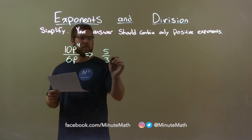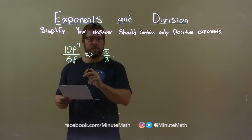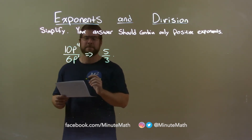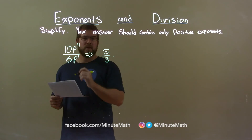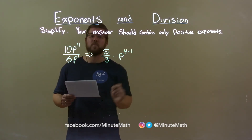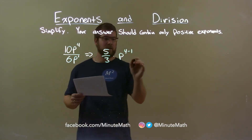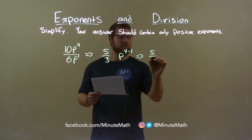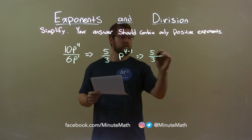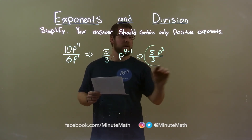Now let's deal with the variable. Remember, that's being multiplied here. We have p to the fourth power divided by p. This p in the denominator is to the first power. When we divide with the same base, we subtract the exponents. So we have p to the fourth minus 1. Well, 4 minus 1 is 3, and so my final answer is 5 thirds, and then in the numerator, since 3 is positive, we keep p to the third power up there. And there we have our final answer.